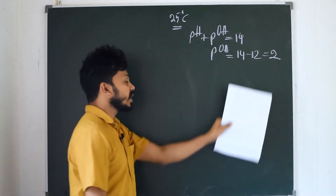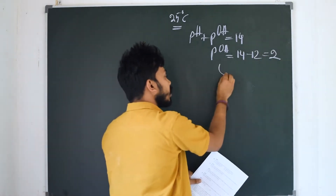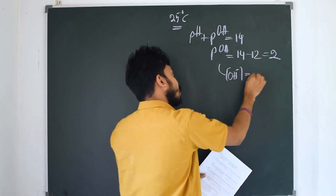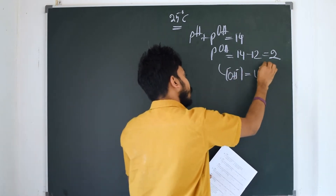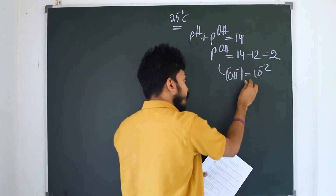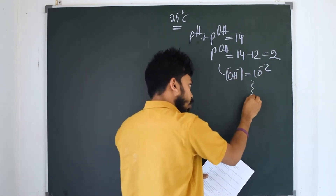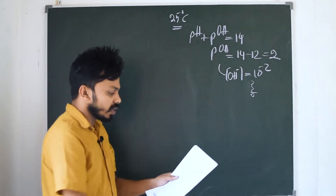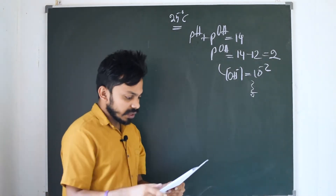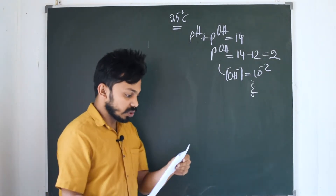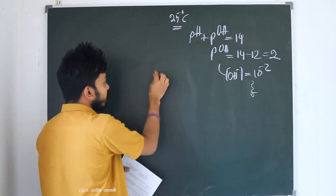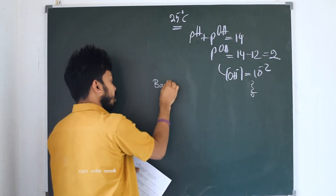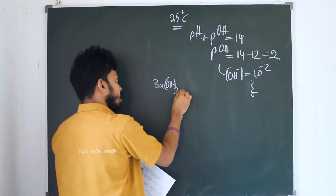If pOH is 12, then OH⁻ is 12. It's 12, OH⁻ is 12. This is the first part of the barium hydroxide, and this is the same thing.